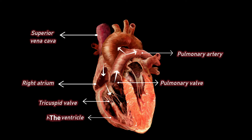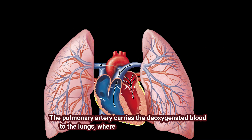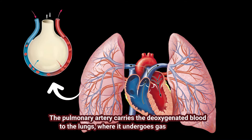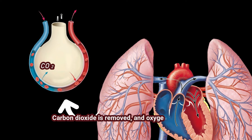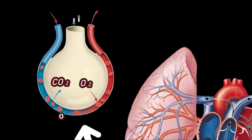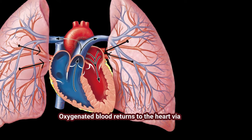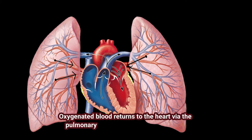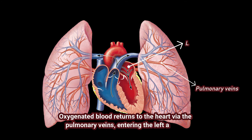The pulmonary artery carries the deoxygenated blood into the lungs, where it undergoes gas exchange. Carbon dioxide is removed, and oxygen is absorbed. Oxygenated blood returns to the heart via the pulmonary veins, entering the left atrium.